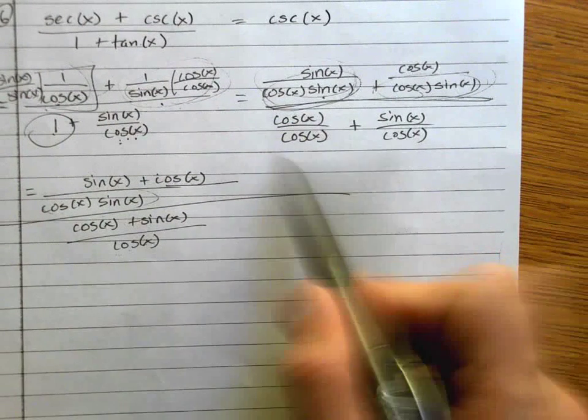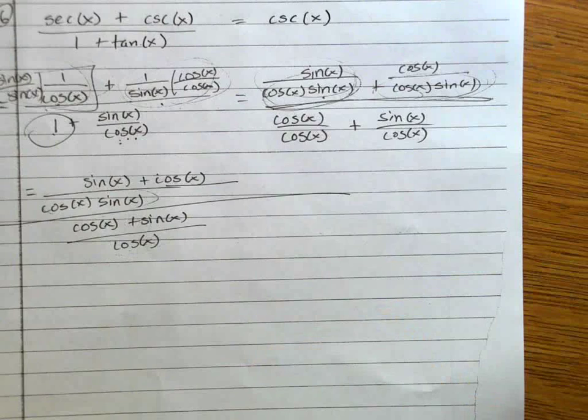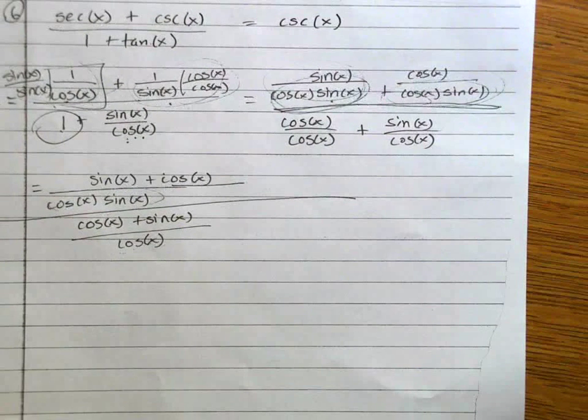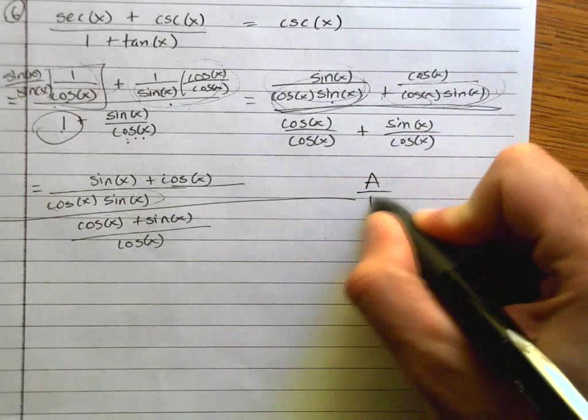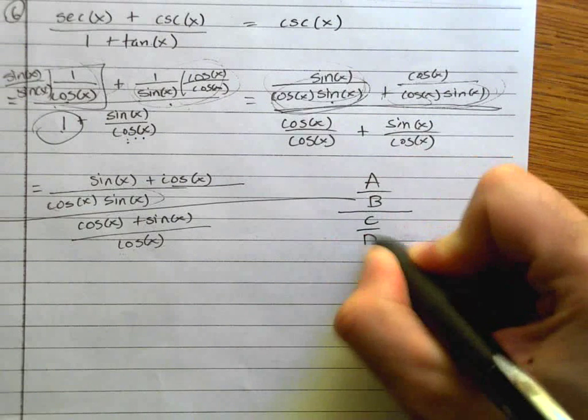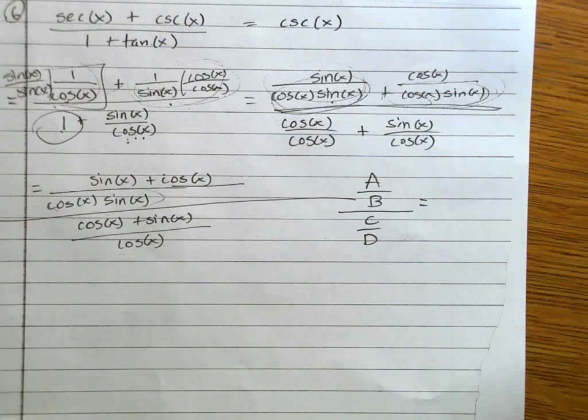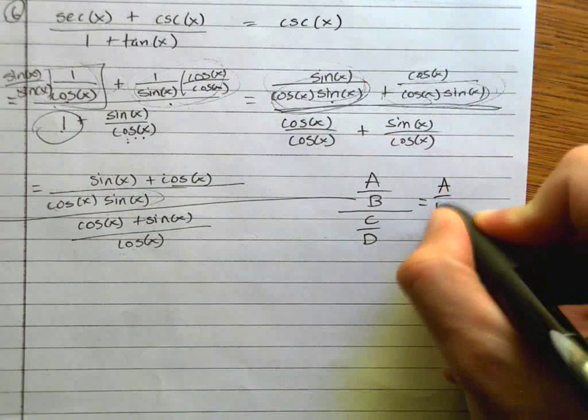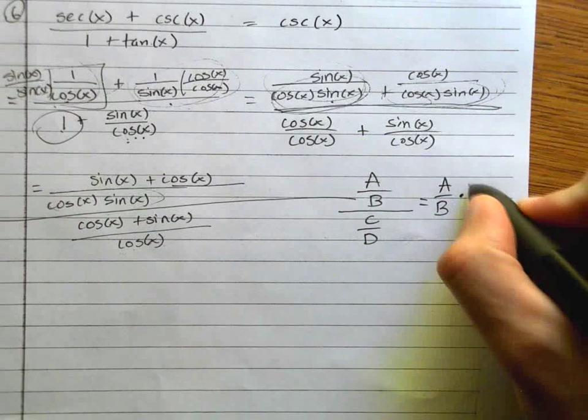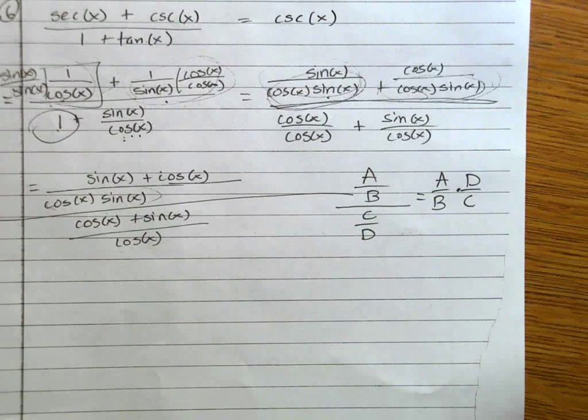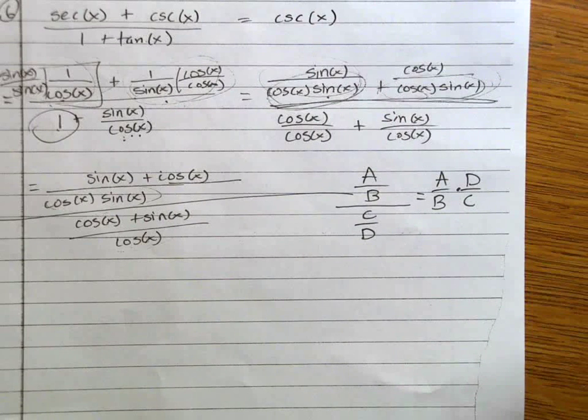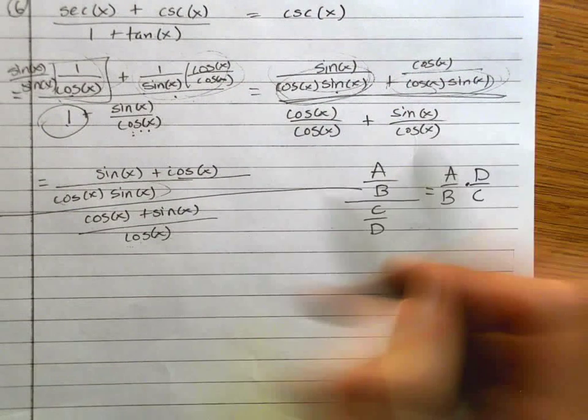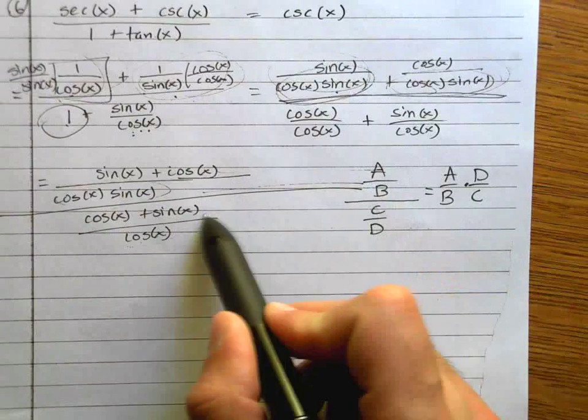You better believe what's about to happen is going to happen. I have something that looks like this, right? A over B over C over D. What does that equal? A over B times D over C, right? That's the whole fundamental idea behind multiplying by the reciprocal. That's what that means. In this case, literally this is A, that's B, that's C, that's D. So we're multiplying it. We're doing it. We're going for it. There it is. I've done it. I'm just going to label them A, B, D, C. Did all the pieces, multiplied it correctly.